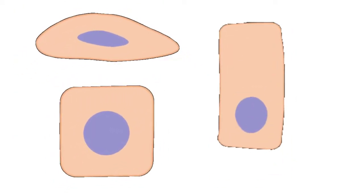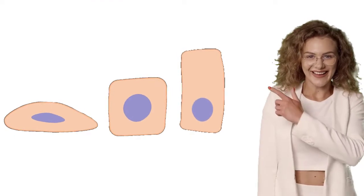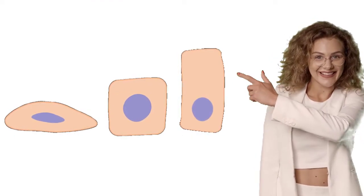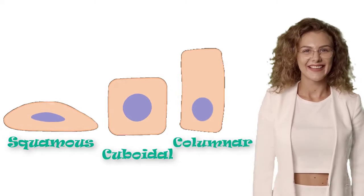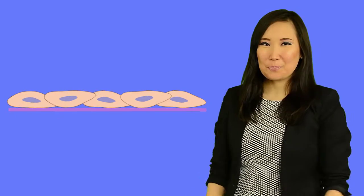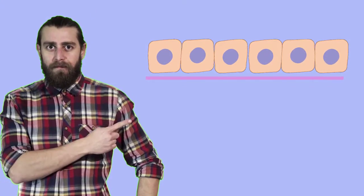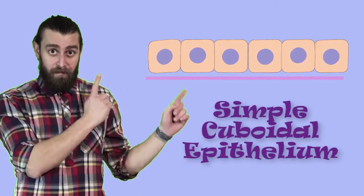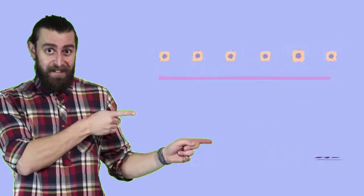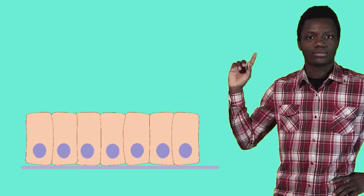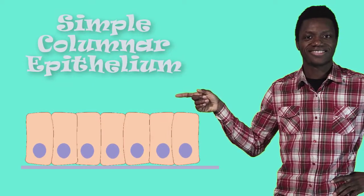The last name of our epithelial tissue tells us about the shape of the epithelial cells that make up that tissue. There are three principal shapes of epithelial cells: squamous, cuboidal, and columnar. For example, a single layer of squamous epithelium would be called Simple squamous epithelium, a single layer of cuboidal epithelium would be called Simple cuboidal epithelium, and a single layer of columnar epithelium would be Simple columnar epithelium.